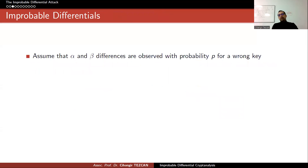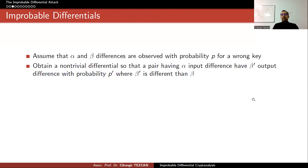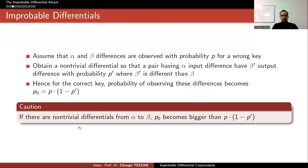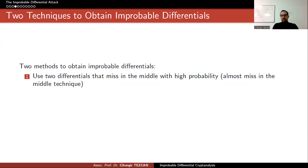The question is how to find a differential that has a lower probability for the correct key than the wrong key. We are going to use something like the miss-in-the-middle technique. Assume that alpha and beta differences are observed with probability p for a wrong key. Obtain a non-trivial differential so that a pair having alpha input difference and beta-prime output difference occurs with probability p-prime, where beta-prime is different from beta. Hence, the probability of observing these differences for the correct key becomes p times one minus p-prime. You should experimentally verify this construction.